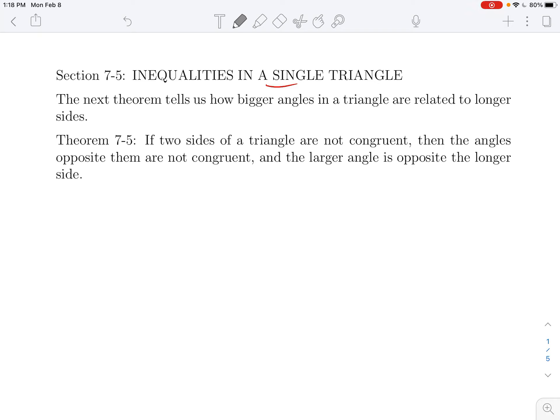This tells us how within a triangle the size of various angles and the size of various sides are related. It's an idea that probably feels very straightforward and kind of obvious once you have the right picture. We're not going to go into the proof, but I do want you to know what these theorems say. Theorem 7.5 says if two sides of a triangle are not congruent, then the angles opposite them are not congruent, and the larger angle is opposite the longer side.